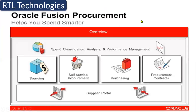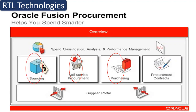So Fusion Procurement comes with several modules. The first is Purchasing — in the purchasing module we talk about requisitions, purchase orders, RFQ, and quotations. After purchasing, we have Self-Service Procurement, where we discuss catalogs, punchout catalogs, local catalogs, informational catalogs, and content zones — this is how requisitions are raised. Then we have Sourcing, where sourcing rules are defined and sourcing documents like RFQ two-way and three-way are specified.